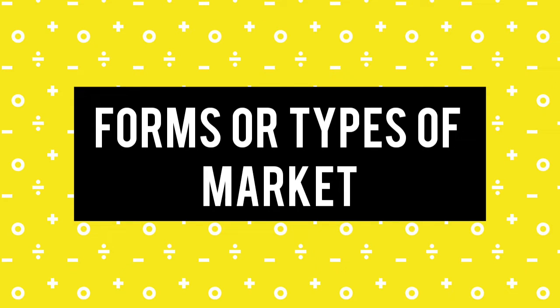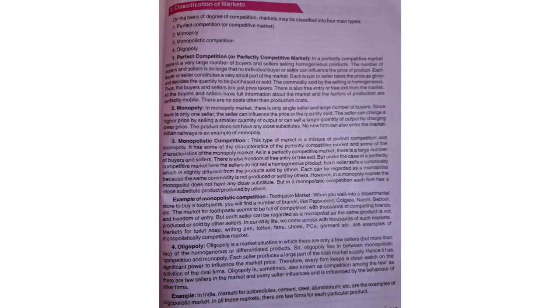Various forms of market or classification of markets. So far we have learned what is a market. A market is a place or region where buyers and sellers meet in order to purchase and sell a particular good. Now, on the basis of the degree of competition, the forms of market can be defined into four main types.